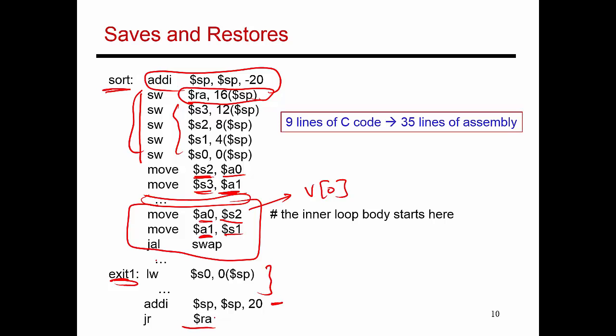Over a bunch of slides, we looked at all the pieces required to implement these nine lines of C code. It results in about 35 lines of assembly. It's hard to fit all 35 lines in one slide, which is why I broke it up into these many slides and introduced each concept incrementally.